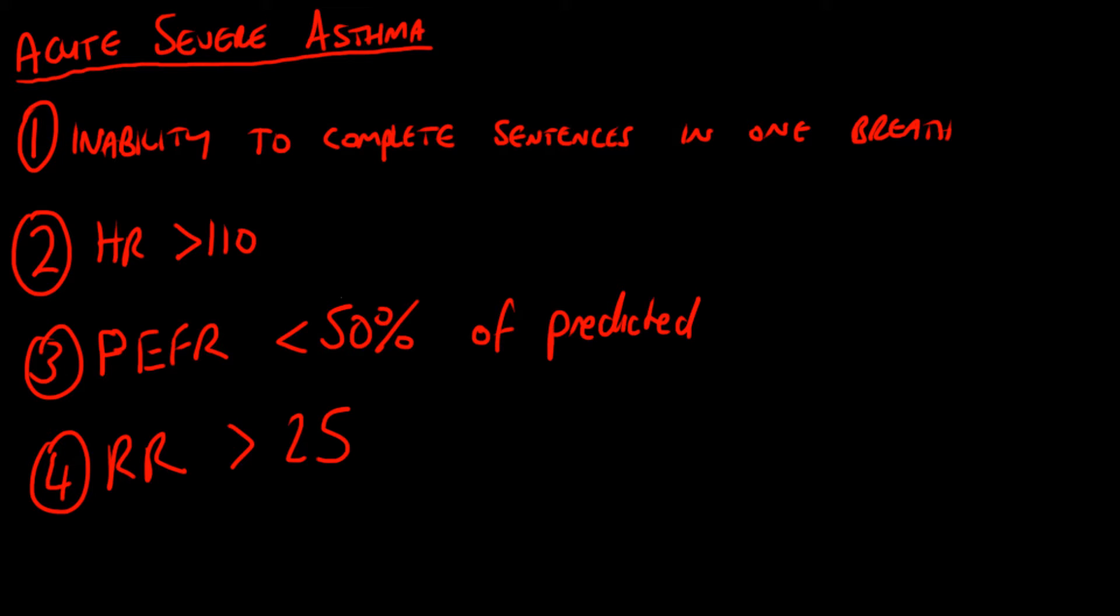For moderate asthma severity, the peak expiratory flow rate would be less than 75% of predicted. In mild asthma, their peak expiratory flow rate would be greater than 75% of predicted values.